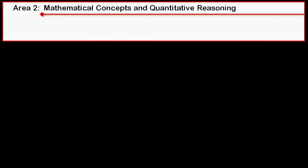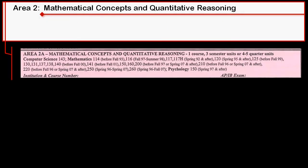Area 2 is the Mathematical Concepts and Quantitative Reasoning area. For IGETC, you'll need at least one math course from this area, but depending on your major, you may end up taking more.